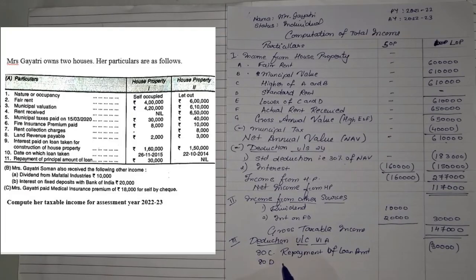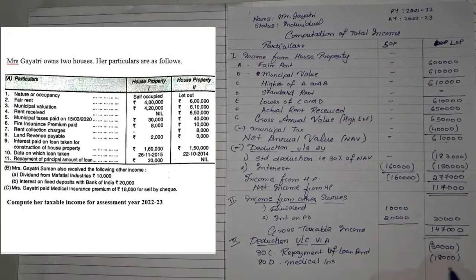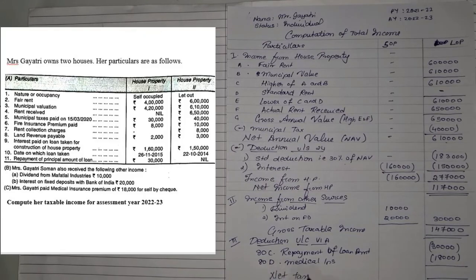Medical insurance comes under 80D, so that comes to 25,000 deduction available. The value has been 18,000 by cheque. If it's by cheque, you will get deduction up to 25,000; since it's only 18,000, we will note it as 18,000. Other than that, there's nothing else available. So from gross taxable income, when we subtract our deductions, we will get the final answer: net taxable income.